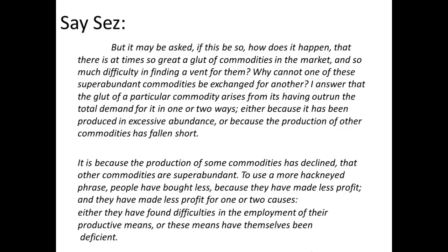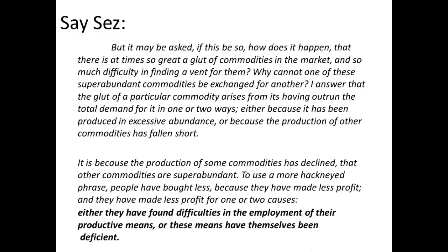Continuing: 'Why cannot one of these superabundant commodities be exchanged for another? I answer that the glut of a particular commodity arises from its having outrun the total demand for it in one or two ways: either because it has been produced in excessive abundance, or because the production of other commodities has fallen short.' He's still in a very classical framework — only one good at a time can be in overabundance. 'It is because the production of some commodities has declined that other commodities are superabundant. People have bought less because they have made less profit. And they have made less profit for one or two causes: either they have found difficulties in the employment of their productive means, or these means have themselves become deficient.'